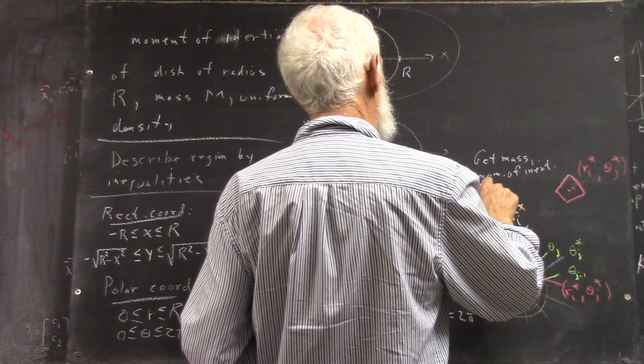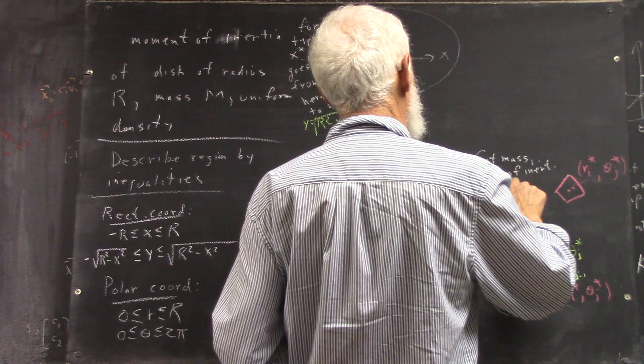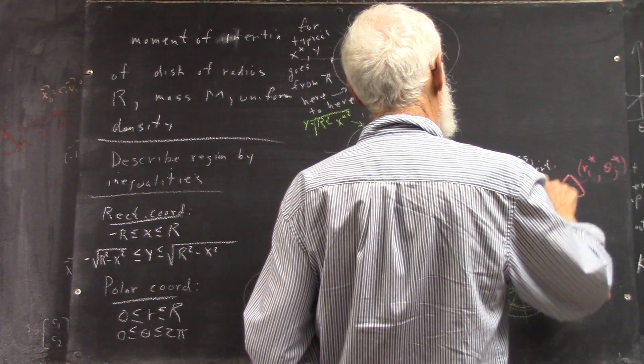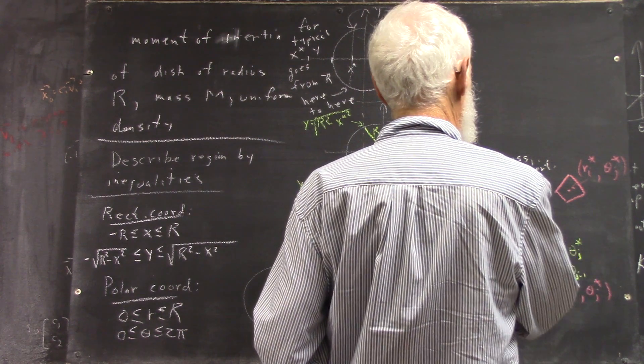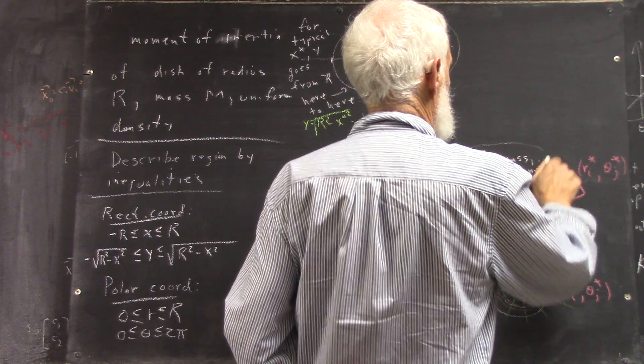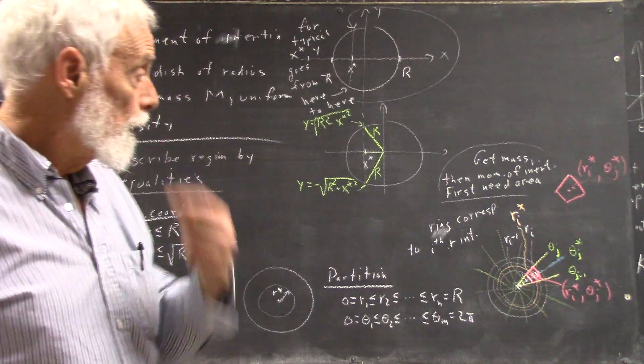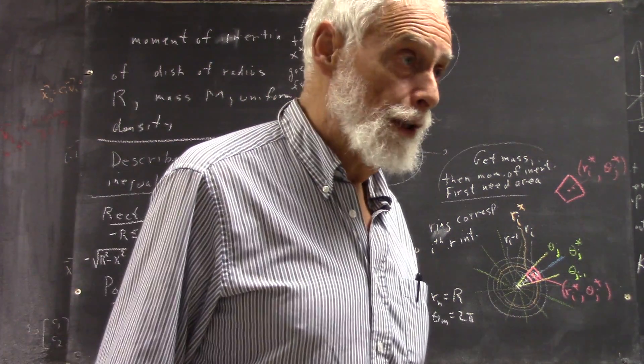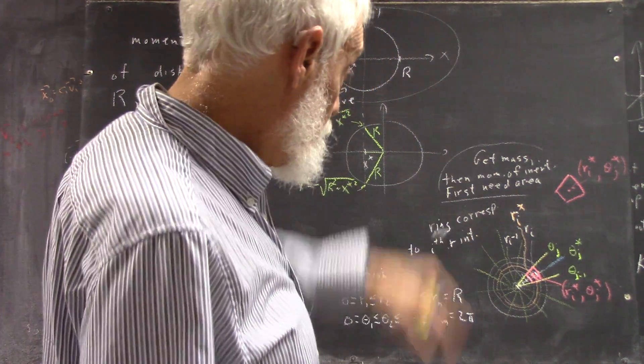So we're going to get the mass at the moment, first we need the area, and once we get the area, everything else just kind of falls in our lap. So what's the area of that region?